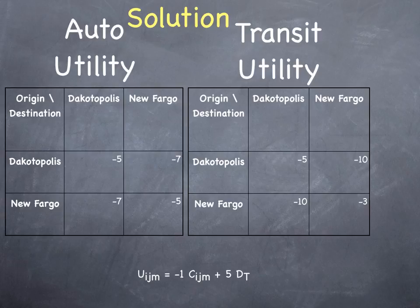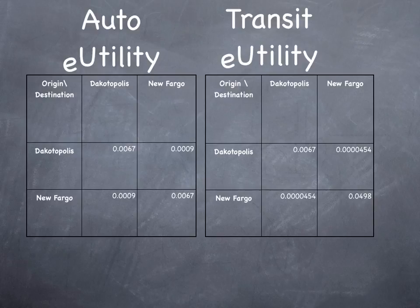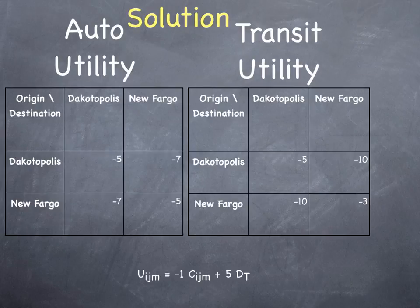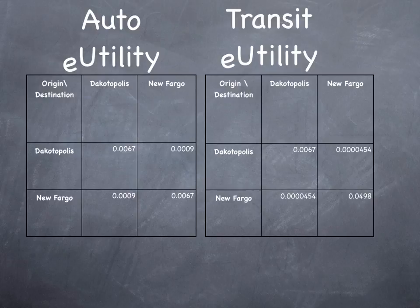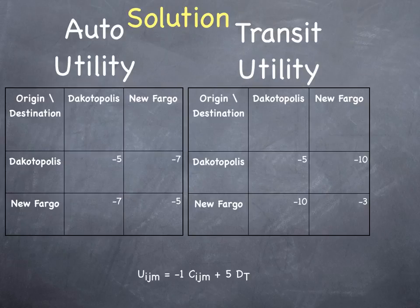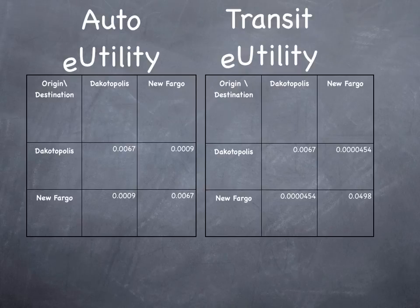The next step in solving a mode choice problem is to exponentiate the utility. Raise these numbers, raise e by these numbers. e to the minus 5 is 0.0067, e to the minus 7 is 0.0009, e to the minus 10 is 0.0000454. Solving this for all four origin-destination pairs for both modes gives us two matrices again.